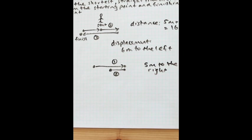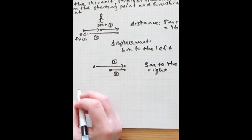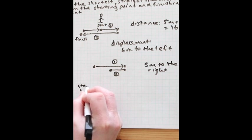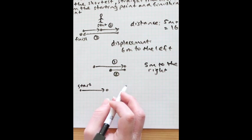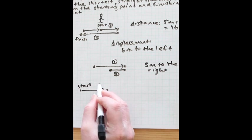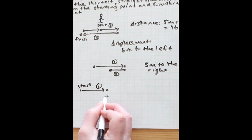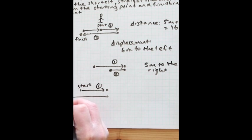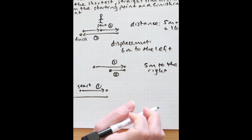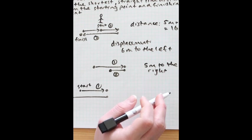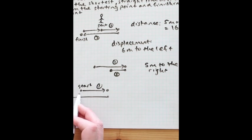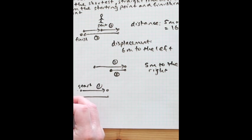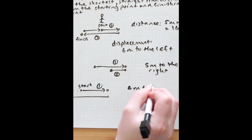Let's look at one more example. Someone starts at this point, then walks to this point as the first step. In the second step, they walk from this point all the way back to this one. We're only going to consider the distance between start and finish — the shortest straight line distance — so it's going to be four meters to the left.